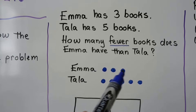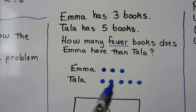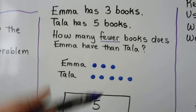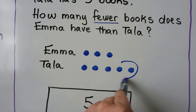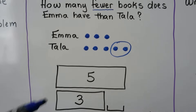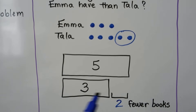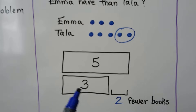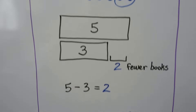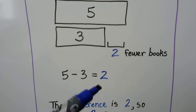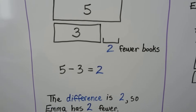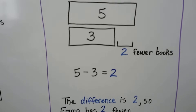We make three dots for Emma's books and five dots for Tala's books, and we can see the difference. The big bar is five; we put the three in a smaller bar. She has two fewer books: five minus three is equal to two. The difference is two, so Emma has two fewer books than Tala.